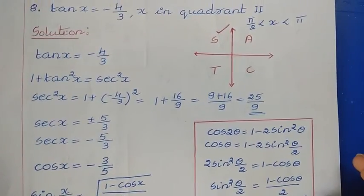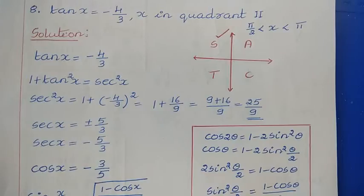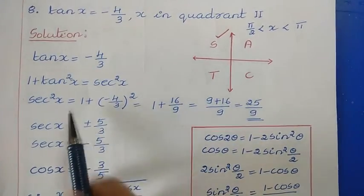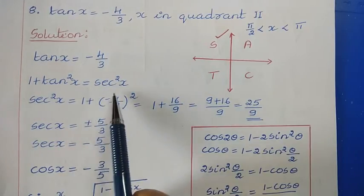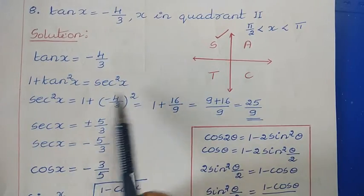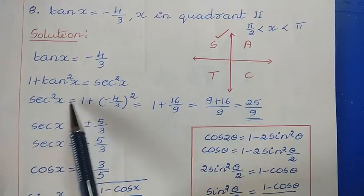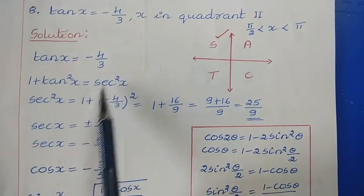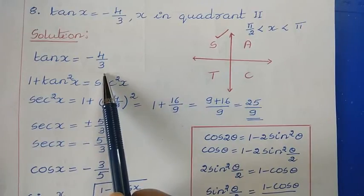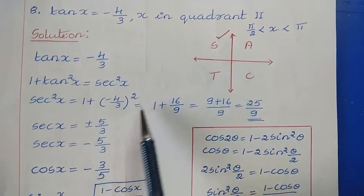We know tan x = −4/3. Using the identity 1 + tan²x = sec²x, just put the value of tan x. So sec²x = 1 + (−4/3)² = 1 + 16/9.